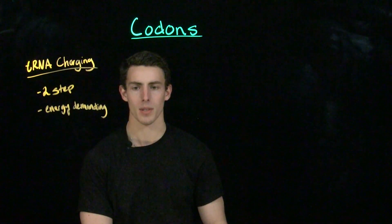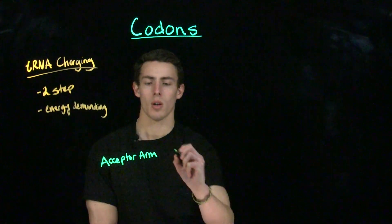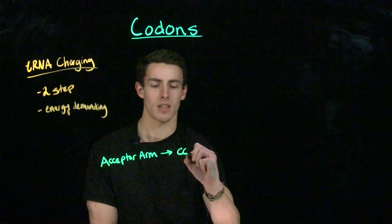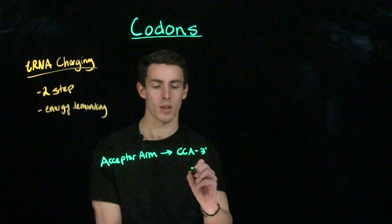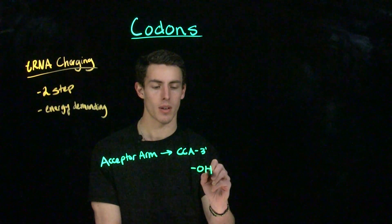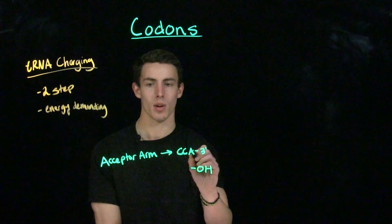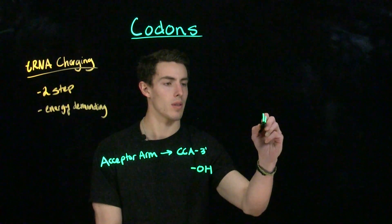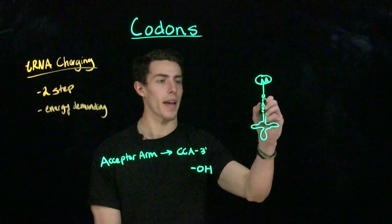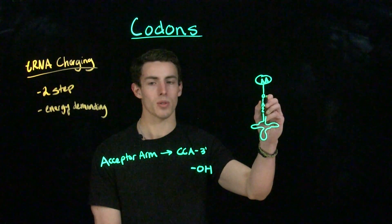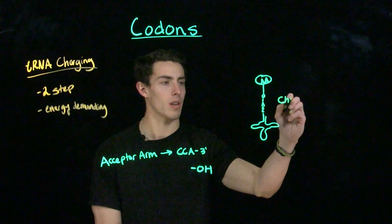If you remember back to when you first learned about tRNA, recall that the acceptor arm has a consensus sequence CCA, and this A is on the three-prime end. We're going to have a hydroxyl group there, so we can add amino acids to the three-prime hydroxyl group of this acceptor arm. When we have a charged tRNA, we form an ester between the three-prime hydroxyl group and the carboxyl group on the amino acid — and thus this will be a charged tRNA.